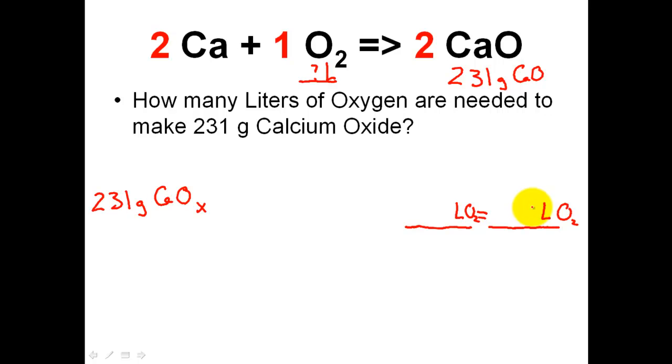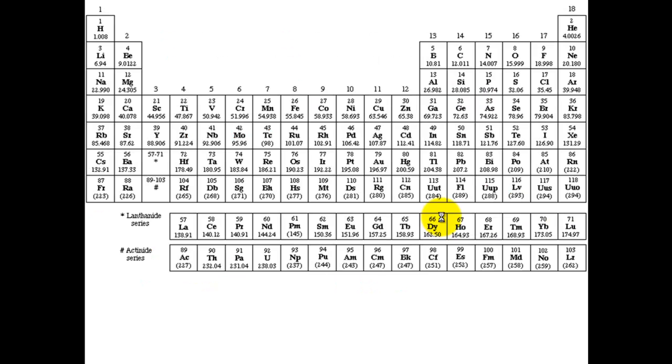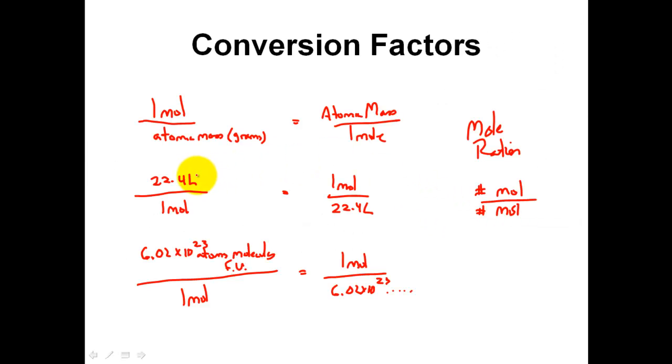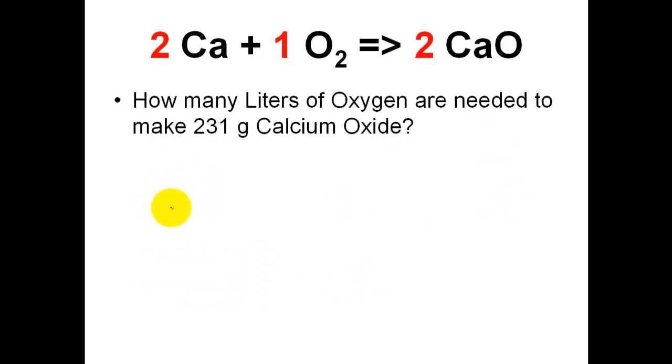What I'm going to do right now is backtrack two slides to the conversion factors. And I want to find a conversion factor that has liters on the top. I'm looking for a conversion factor that has liters on the top. That one has liters, but neither one has liters on the top, and so this one is going to be the one I use. It's 22.4 liters over one mole. So over here, I'm going to write down 22.4 liters of oxygen in one mole of O2.